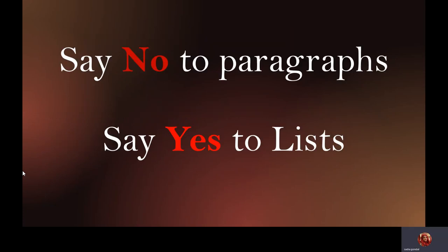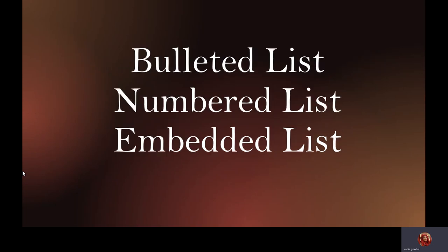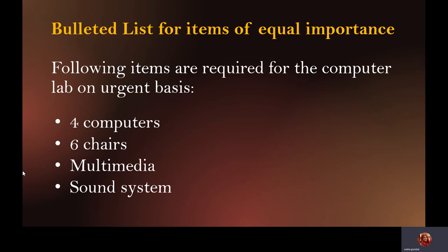We do not appreciate paragraphs in email writing. Instead, we use lists — we divide information into chunks so the reader is not scared by the amount of words, and takes it as easy reading. We have three kinds of lists used in email writing: bulleted, numbered, and embedded. We use bulleted lists when talking about objects of equal importance or items of the same type.